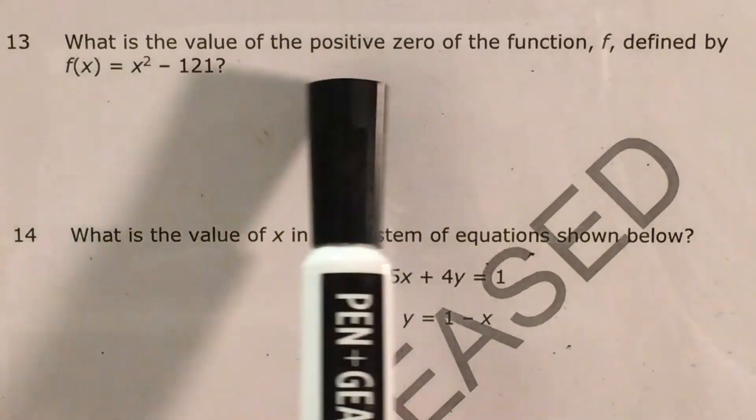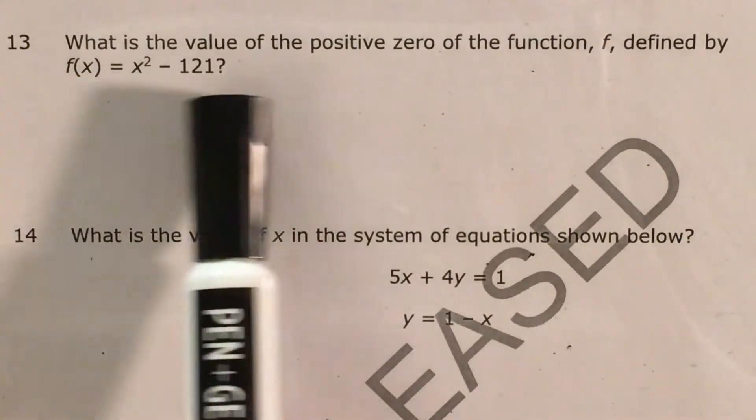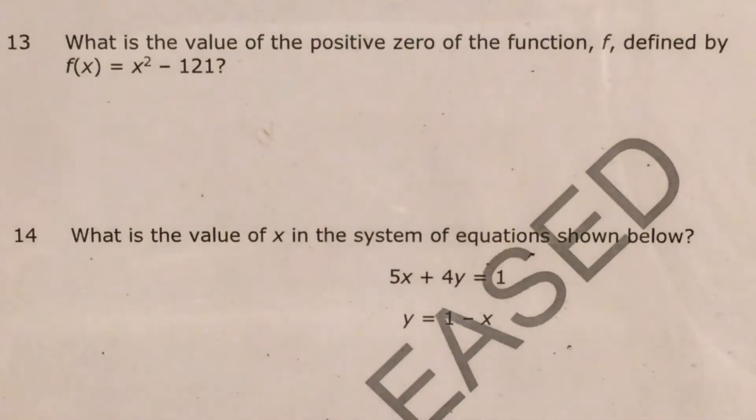Today we're going to tackle question 13 in the Math 1 questions that North Carolina released this past school year. This question is only asking us to find the value of the positive zero of the function f defined by f of x equals x squared minus 121.